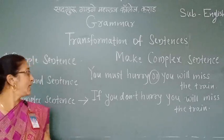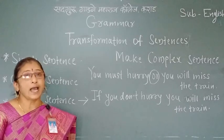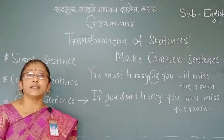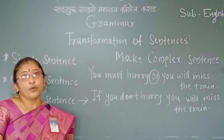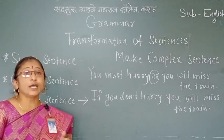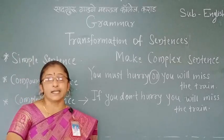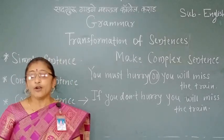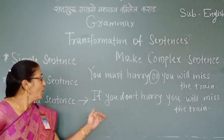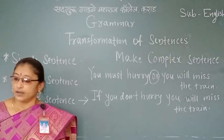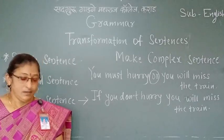In transformation of sentences there are three main types of sentences: simple sentence, compound sentence, and complex sentence. In a simple sentence there is only one main clause. In a compound sentence there are two main clauses joined with coordinating conjunctions. In a complex sentence there is one main clause and one or more subordinate clauses joined with subordinate conjunctions.